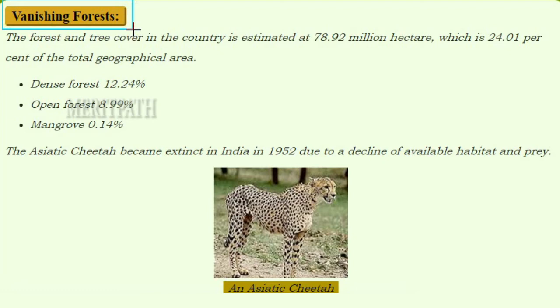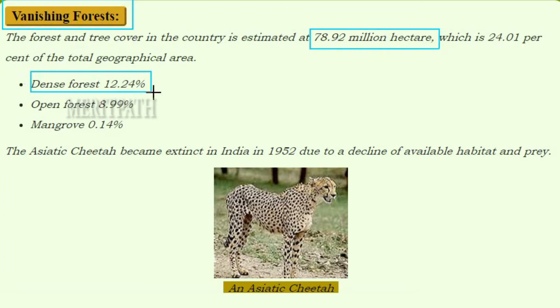Regarding vanishing forests, the forest and tree cover in India is estimated at 78.92 million hectares, which is 24.01 percent of the total geographical area. Dense forest accounts for 12.24 percent, open forest 8.99 percent, and mangrove forest 0.14 percent.